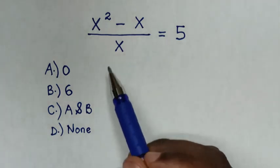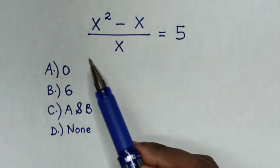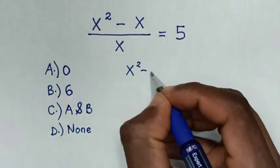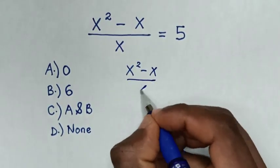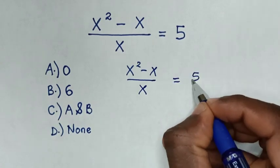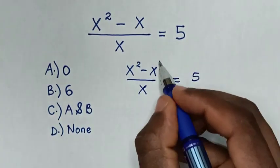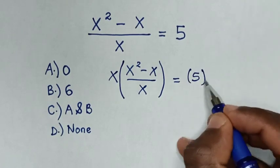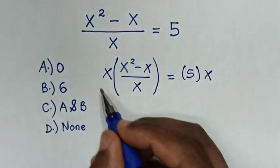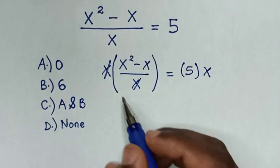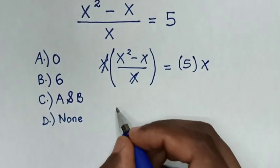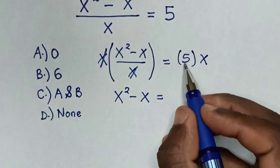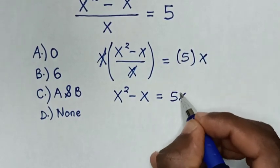First, we remove the denominator by multiplying by x on both sides. So it will be x squared minus x over x is equal to 5, and we multiply by x on both sides. This x will cancel that x, so it becomes x squared minus x is equal to 5x.